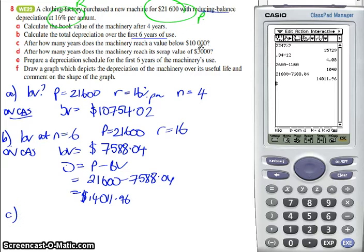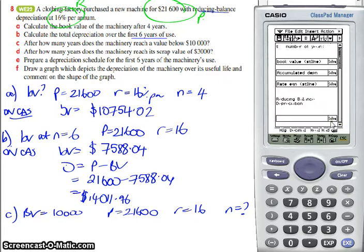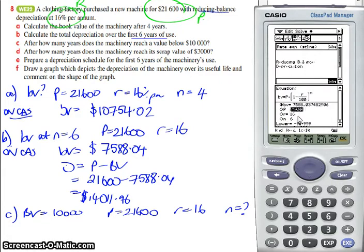Part C. How many years does the machinery reach a value below 10,000? If my book value is 10,000, I start with the purchase price of 21,600. It's still the same interest rate. We want to find how long. So let's go back to our e-activity. 21,600, and I'll delete that. I do know this one is 10,000. Let's solve for m.